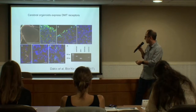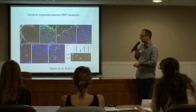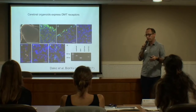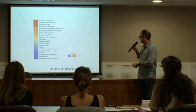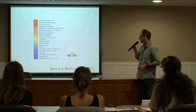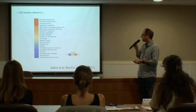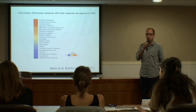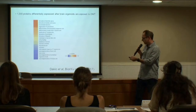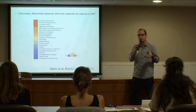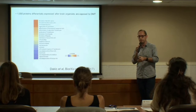We also worked with DMT itself. We first showed that brain organoids have the receptors for DMT — the serotonergic receptors and also the sigma-1 receptor. In collaboration with Juliana Minardi and Daniel Martins from New York, we did proteomics of all the proteins changed after organoids were exposed to DMT. We found almost 1,000 proteins changed after 24 hours of treatment, and the majority are associated with learning and plasticity, which is very interesting when you think about the effects that occur.